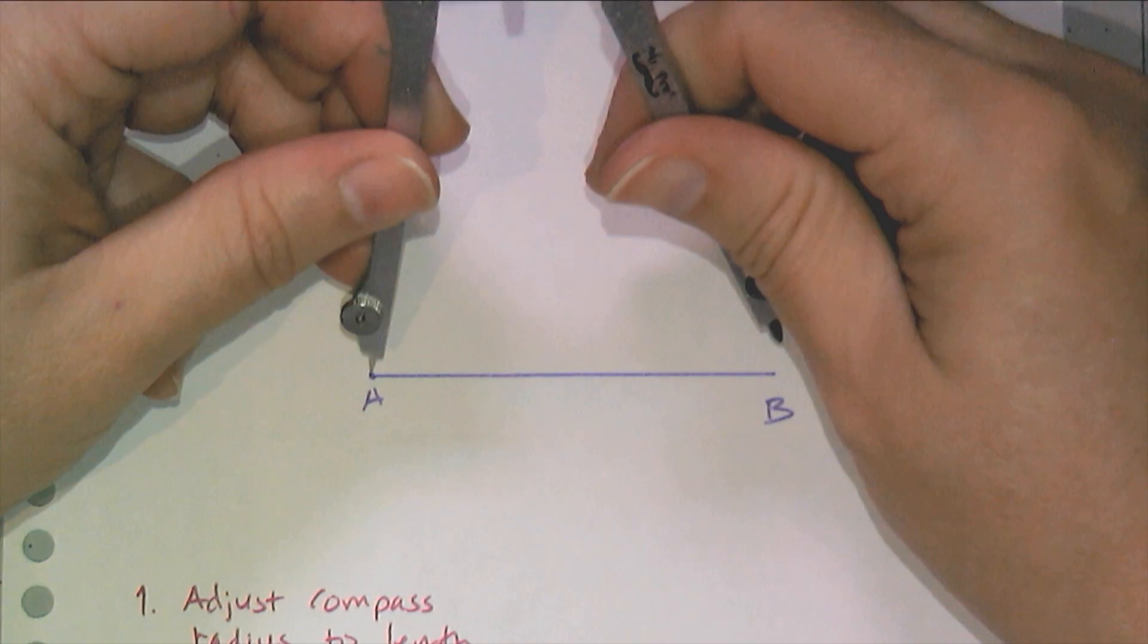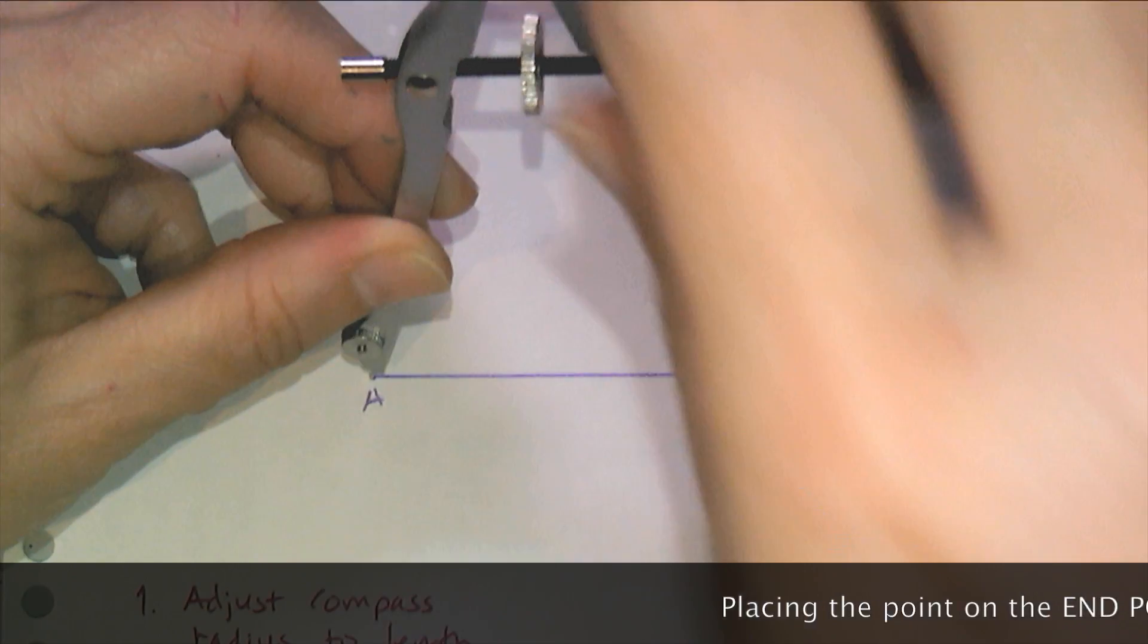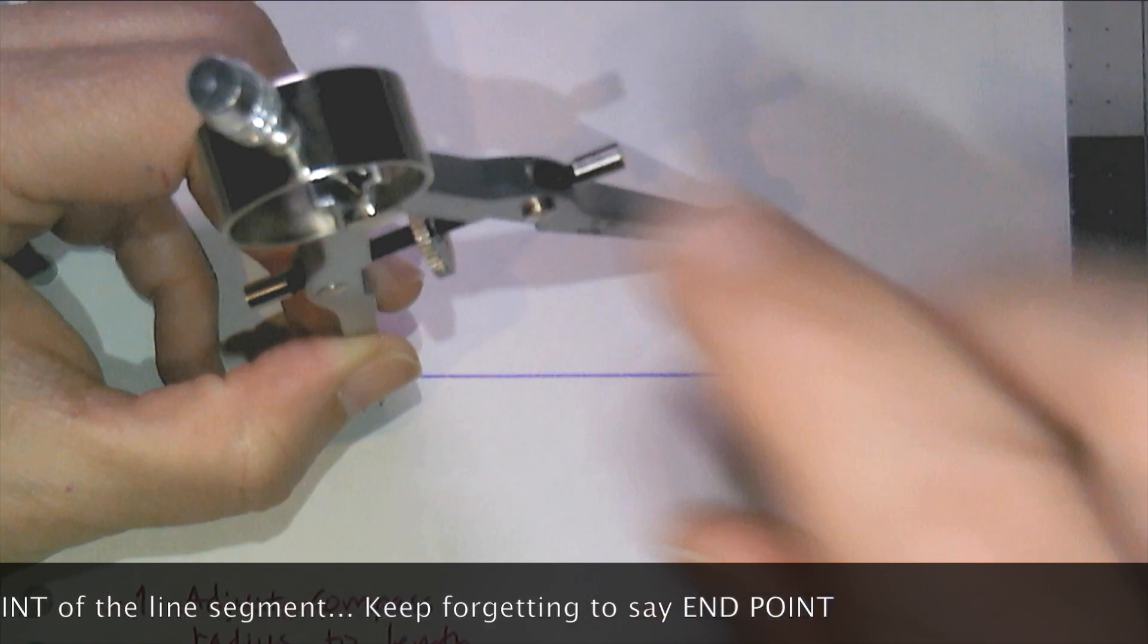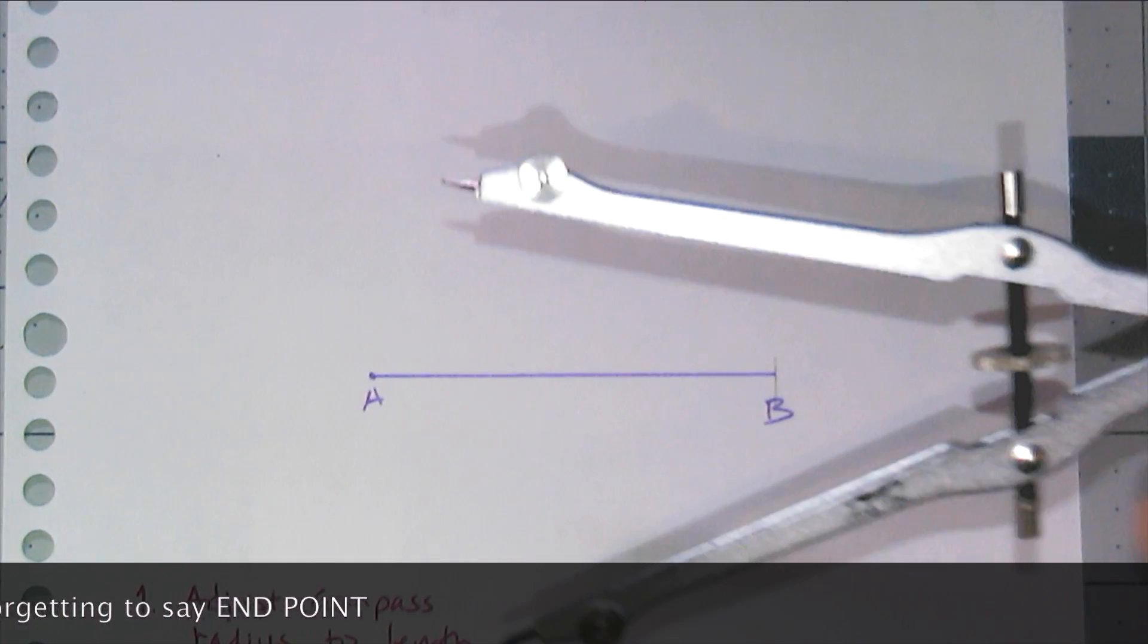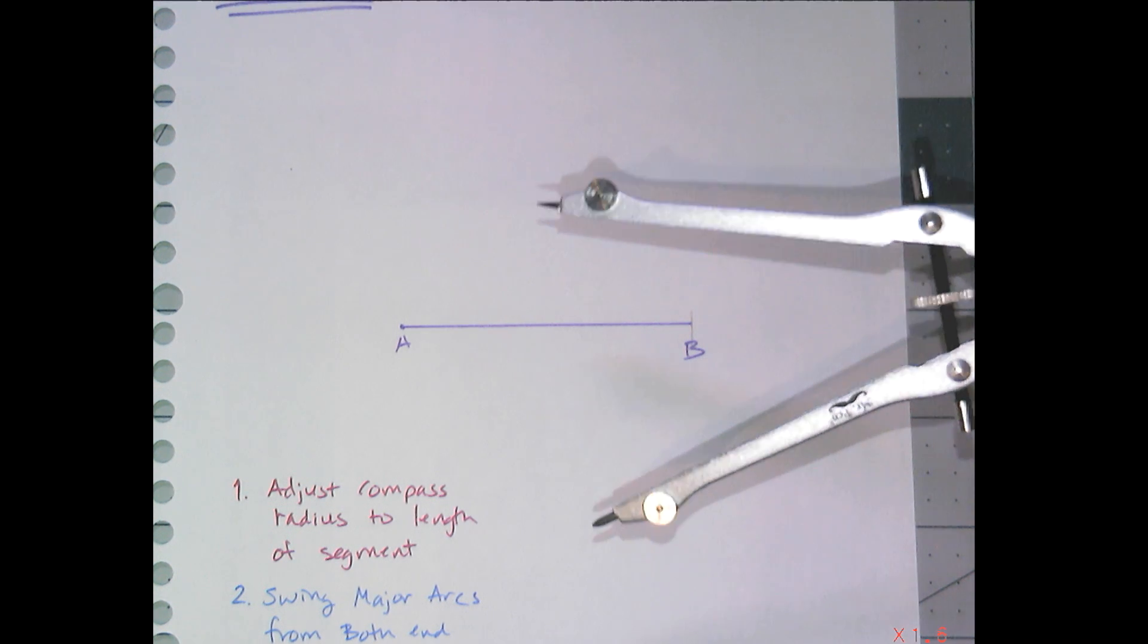And I always test it. I test my length of my radius by putting the point on one line segment and drawing a tiny arc and making sure I hit that other line segment. So it does, and so this is the proper radius for this perpendicular bisector.